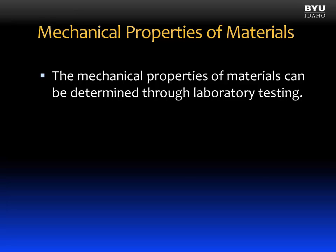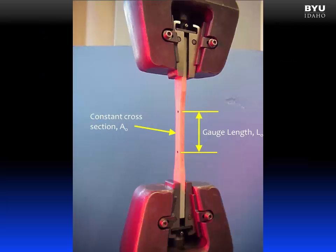The mechanical properties of materials can be determined through laboratory testing. Here is a photograph of a test in progress. What we have here is a testing machine, and these are the clamps of the machine, and inside the clamps is a test specimen. We call this a dog bone specimen because it is wider at the top and bottom where the clamps attach, and it is narrow in the middle of the specimen. The purpose for making a dog bone specimen is so that the failure and the elongation that occurs to the sample during testing occurs here in this region of constant cross-section and so that we don't get a failure in the vicinity of the clamp where we can get stress concentrations.